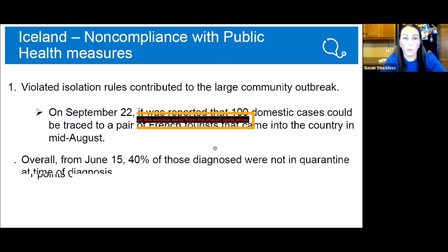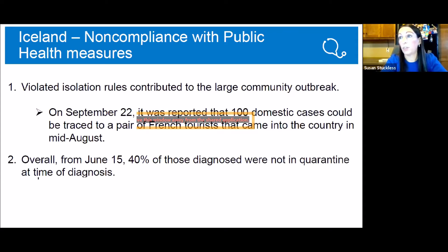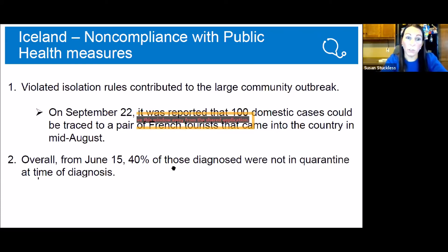What led to the huge cluster seen in Iceland: two tourists violated isolation rules, and on September 22nd they could trace back 100 cases to these tourists who went out into the entertainment district, spreading it throughout bars and restaurants. Additionally, since June 15th, 40% of those diagnosed were not in quarantine at the time of diagnosis, which further led to community spread.